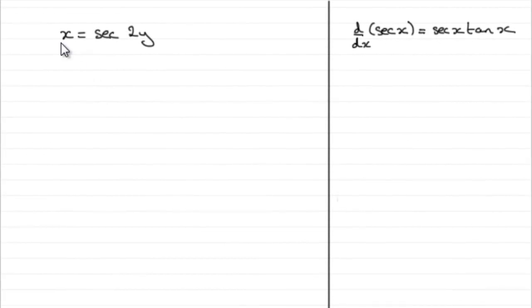So for this part then, we're given that x equals sec 2y and asked to find dx by dy in terms of y.